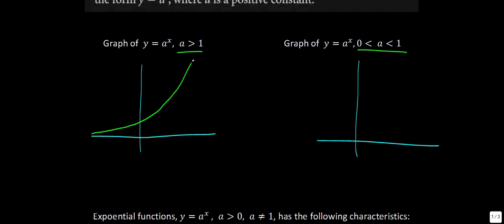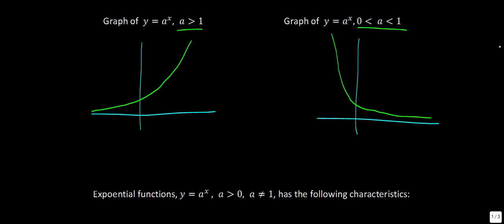On the left-hand side we'd call this exponential growth; on the other side you'll see something almost the exact opposite — a curve that starts high and works its way down. When a is greater than 1, as x increases, y increases. This should be pretty obvious: as x gets bigger and bigger, y is getting bigger.